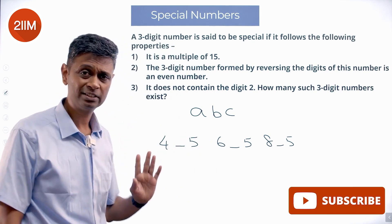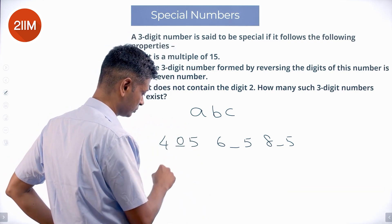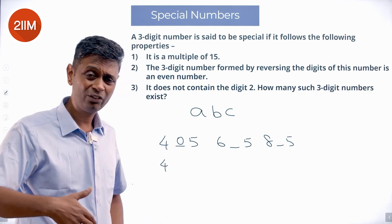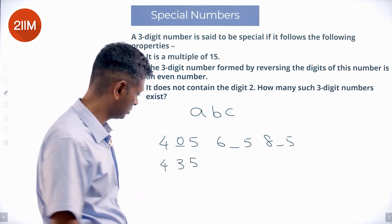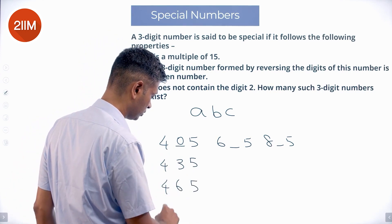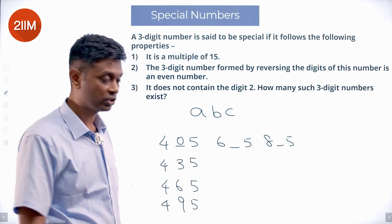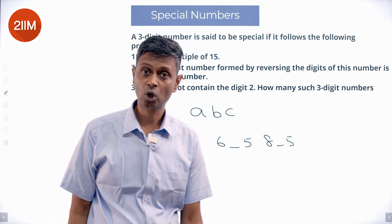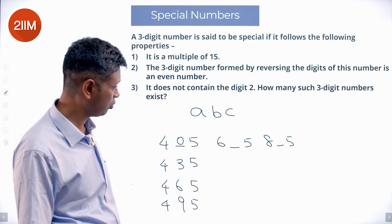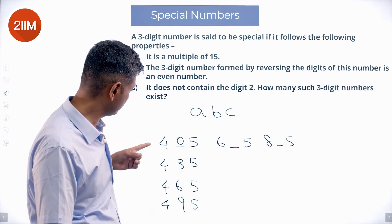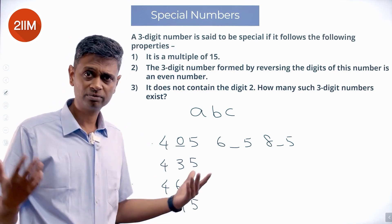We need to accommodate the fact that this number has to be a multiple of 3. That means the sum of the digits has to be a multiple of 3. So 4 plus 5 is 9. That is a multiple of 3. So the digit could be 0. 4 plus 5 is 9. If you add 3 to it, 4-3-5. That will be a multiple of 3. 4-6-5. All of them can work. 4 numbers are possible. 4-0-5 is a multiple of 3, multiple of 5 is 15. Three-digit number formed by reversing is an even number. Yes, it works. Does not contain a digit 2. Wonderful.